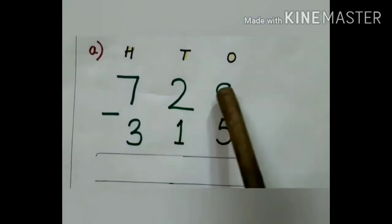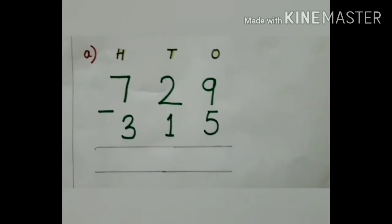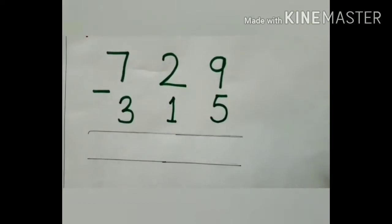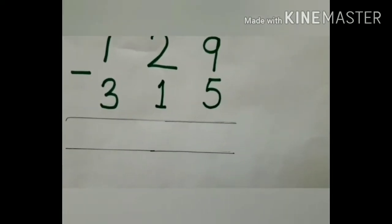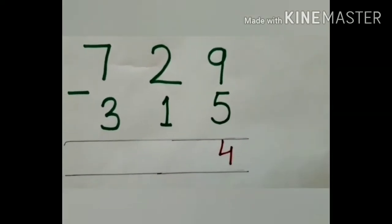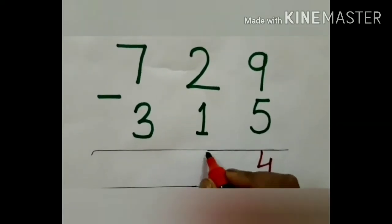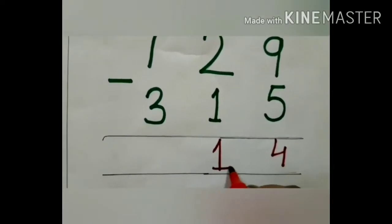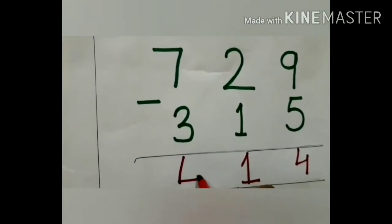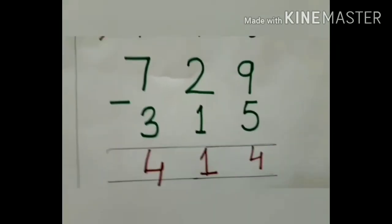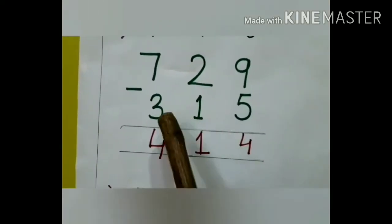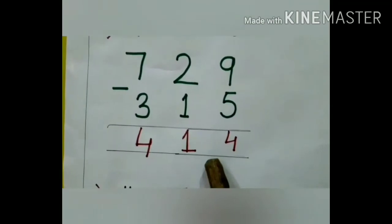In subtraction, the greater number is always written above the smaller number — this you have to keep in mind. Now let us do the subtraction. 9 minus 5: from 9 if I take away 5, 4 is remained. Then 2 minus 1 is 1. And 7 minus 3 is 4. So from 729 if I take away 315, my answer will be 414.